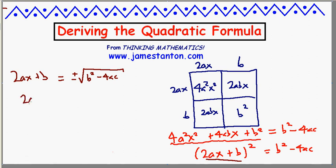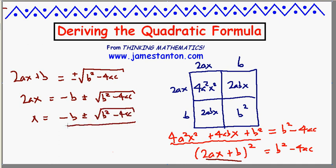Well, let's add negative b to both sides. 2ax is negative b plus or minus square root of b squared minus 4ac. And let's divide throughout by 2a. x must be negative b plus or minus square root of b squared minus 4ac, all over 2a. Voila.